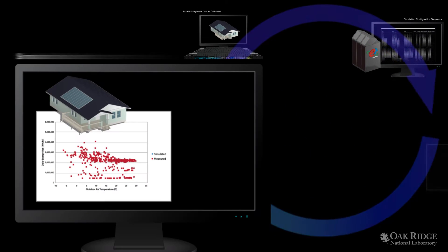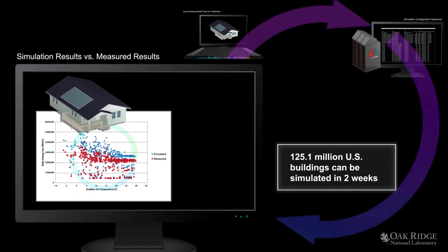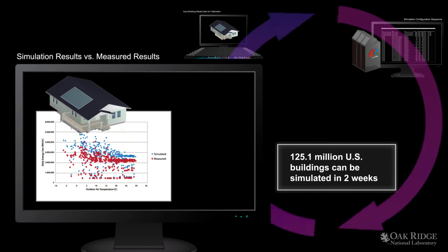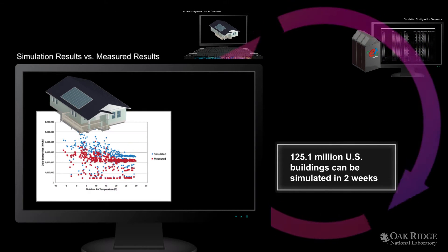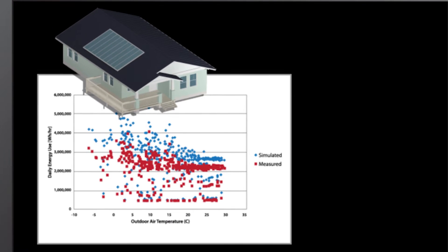Here we see a real-life example. By plotting temperature against the energy consumed by a building, one can see a mismatch between the simulated and measured data.